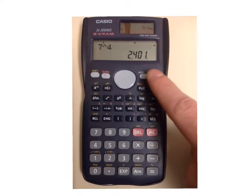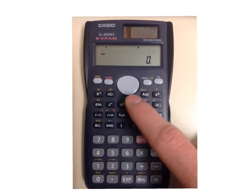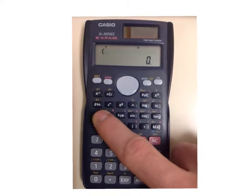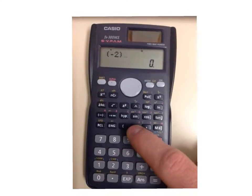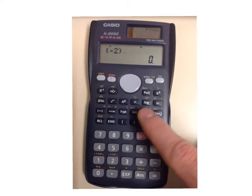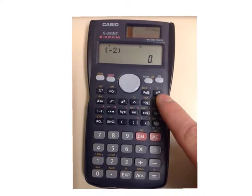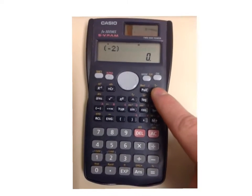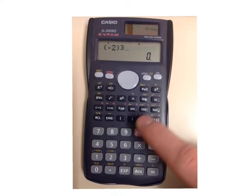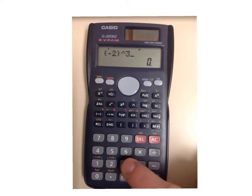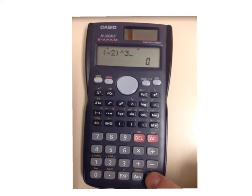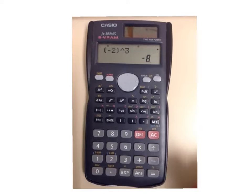Now if you want to do negative numbers, say you want to do negative 2 in brackets with an exponent of 3. Well, on these calculators there is an exponent of 3 button, so you could press that, or you could use the general exponent button. Either way, you'll get the same answer, negative 8.